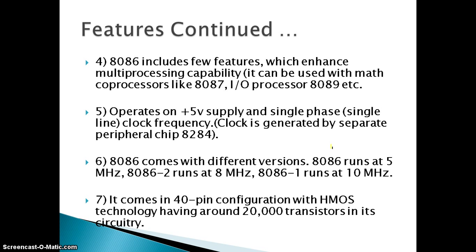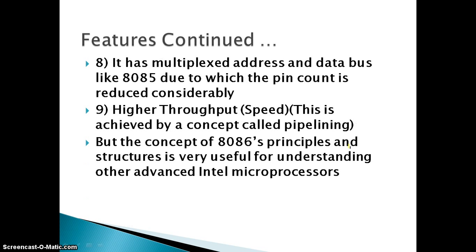The 8086 has a 40-pin configuration made up of HMOS technology, having 20,000 transistors in the circuit. There are even higher versions with more transistors. The addressing and data multiplexing is similar to the 8085, which is the previous version microprocessor, and the same technology is used here.